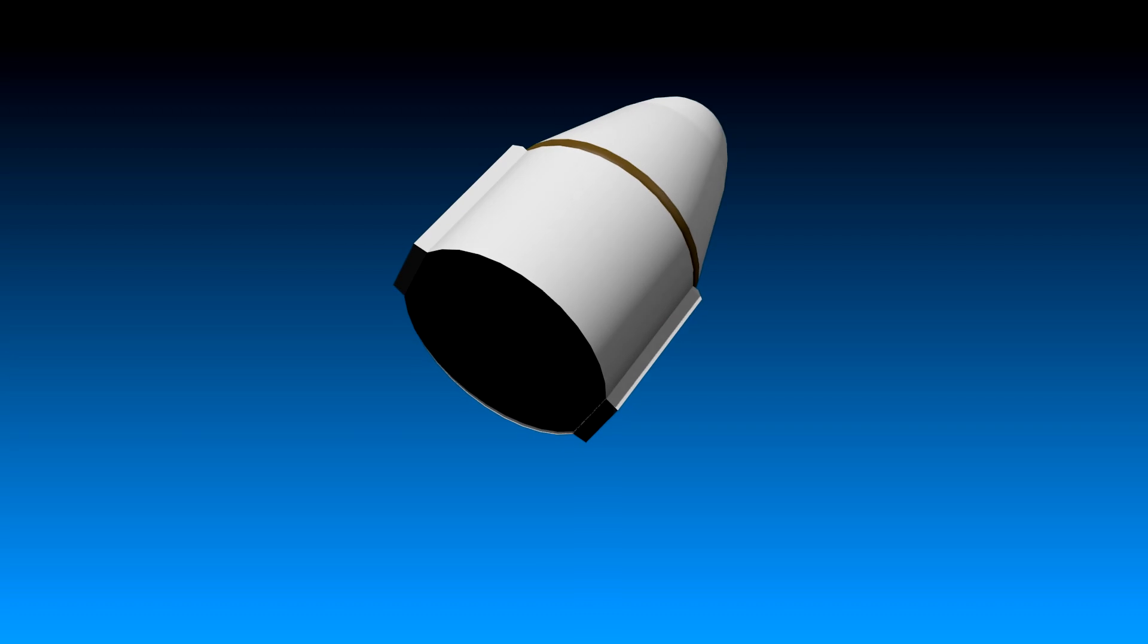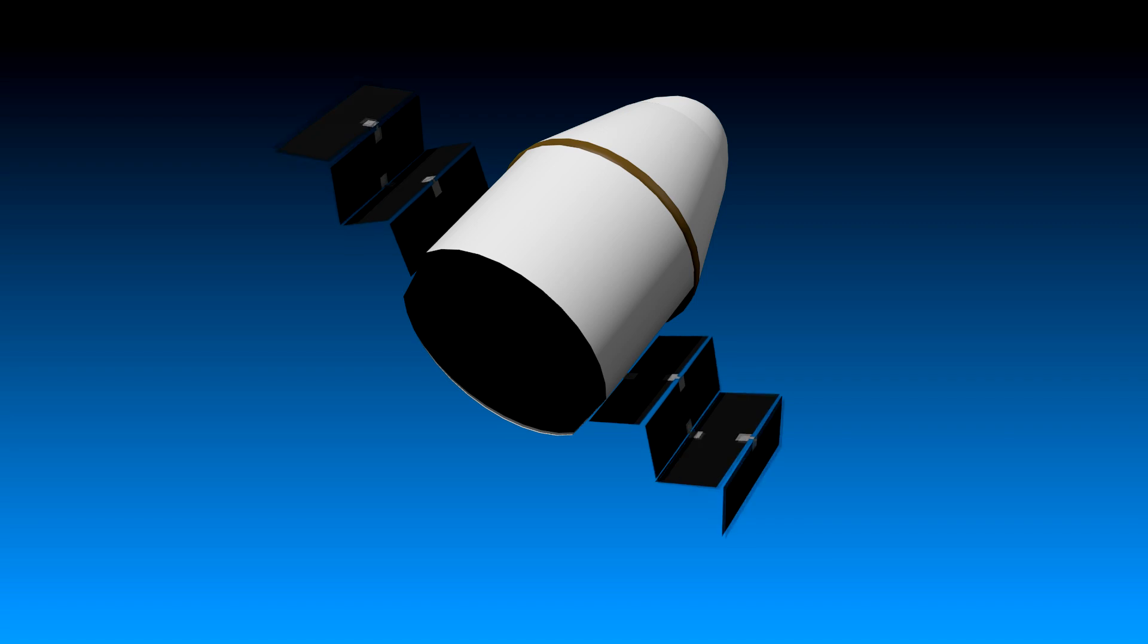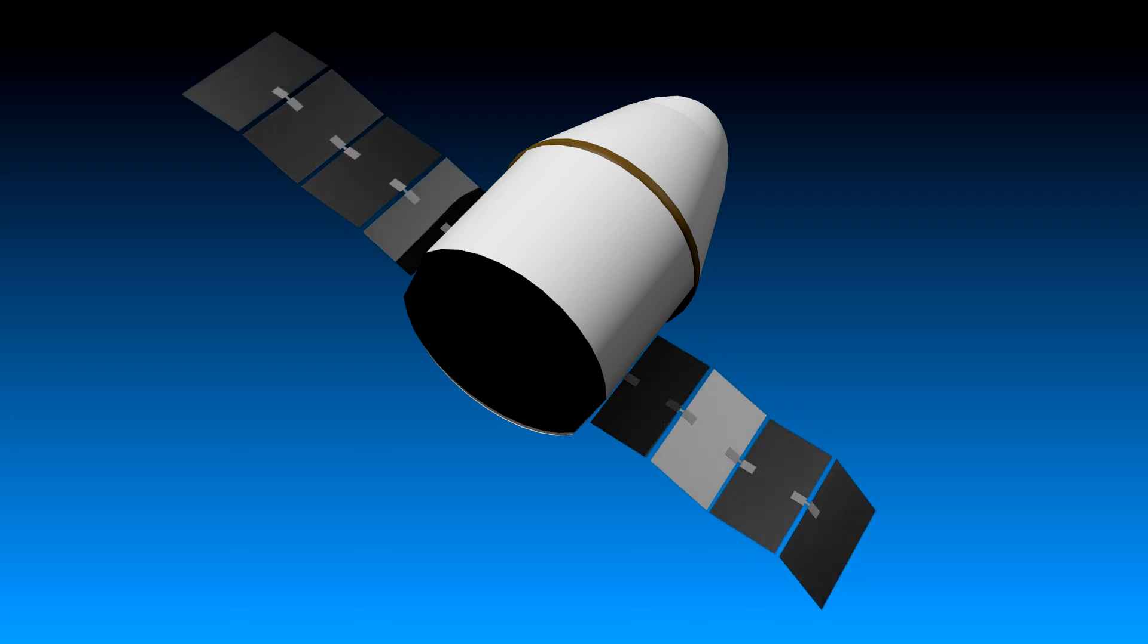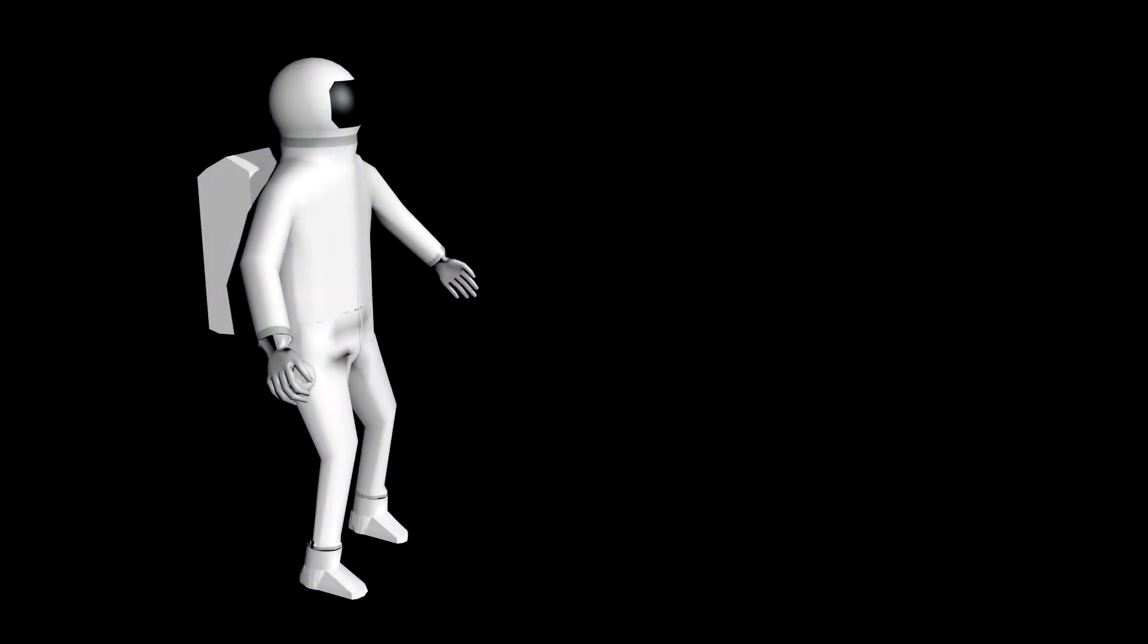But there's a problem. Once the rocket gets to space and runs out of propellant, if it's not going fast enough, then the Earth's gravity will eventually slow it down until it stops and falls back again.